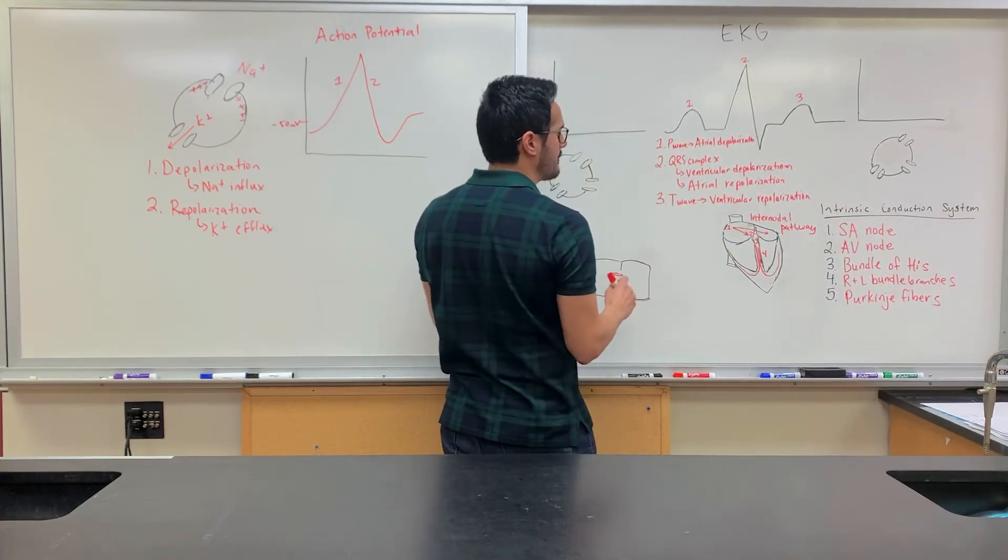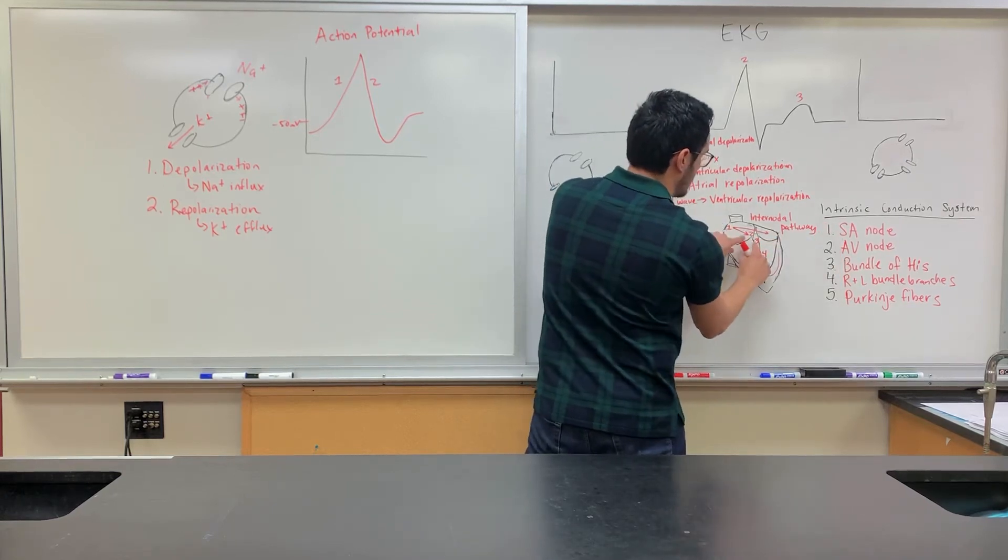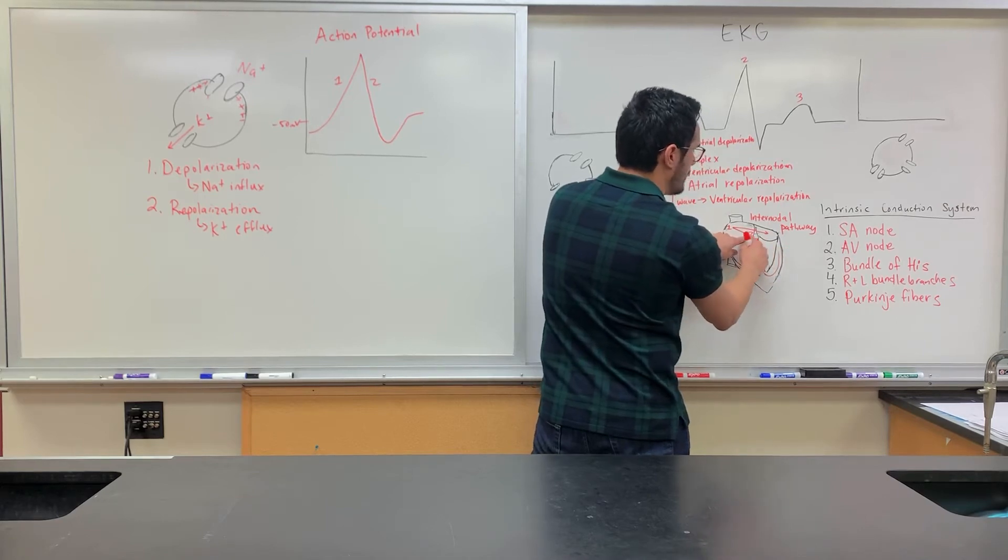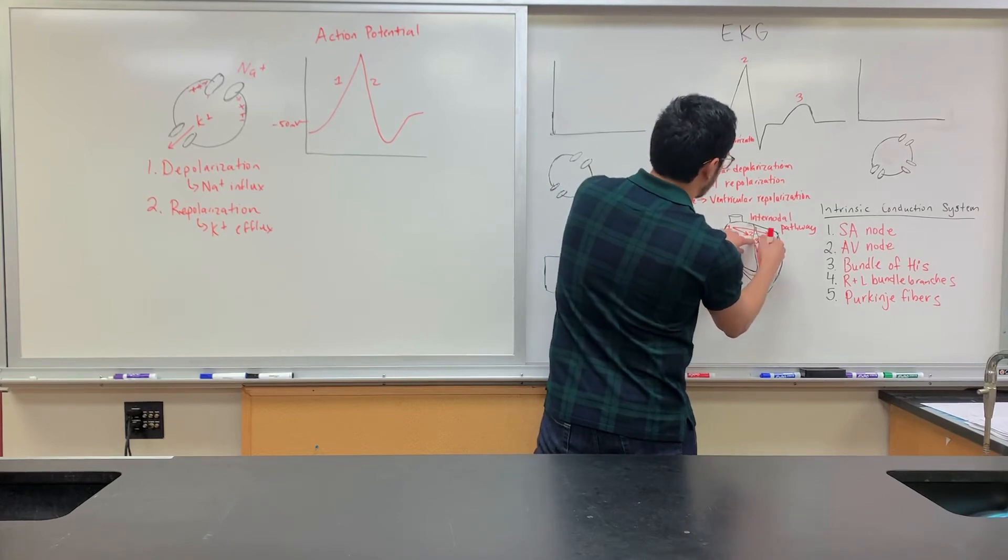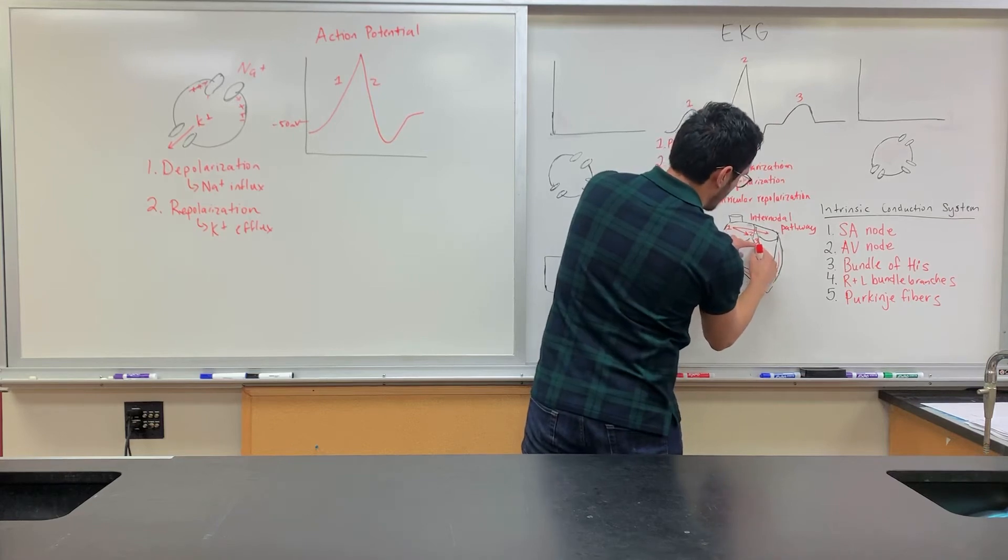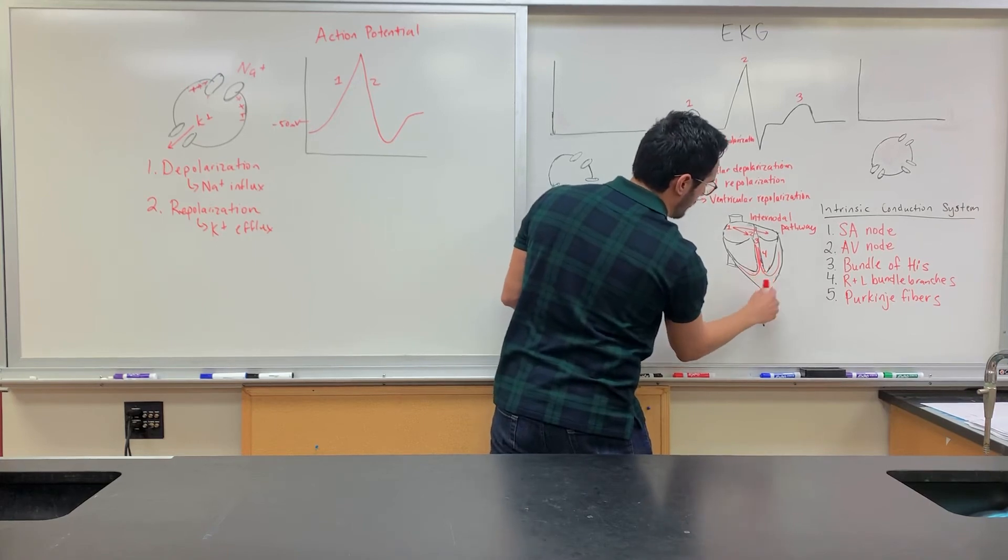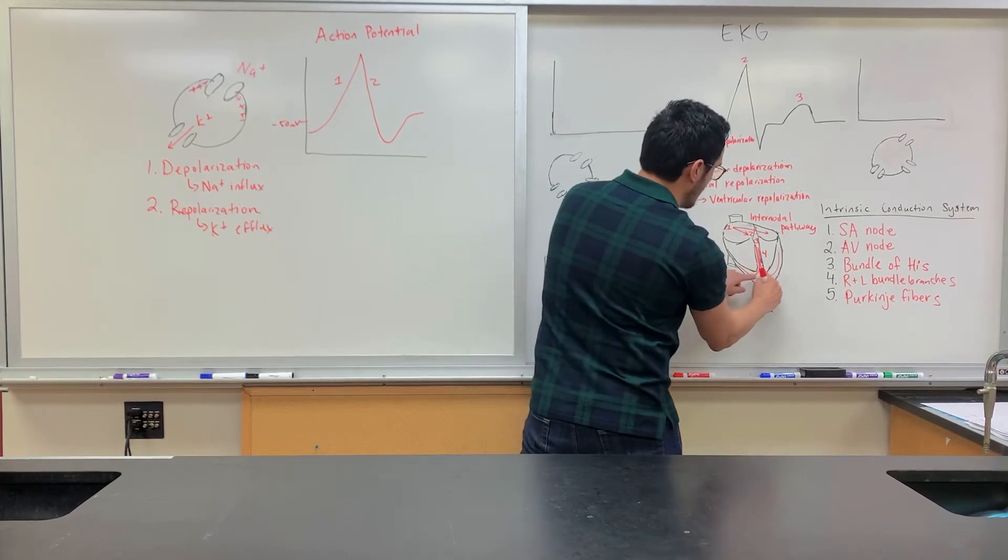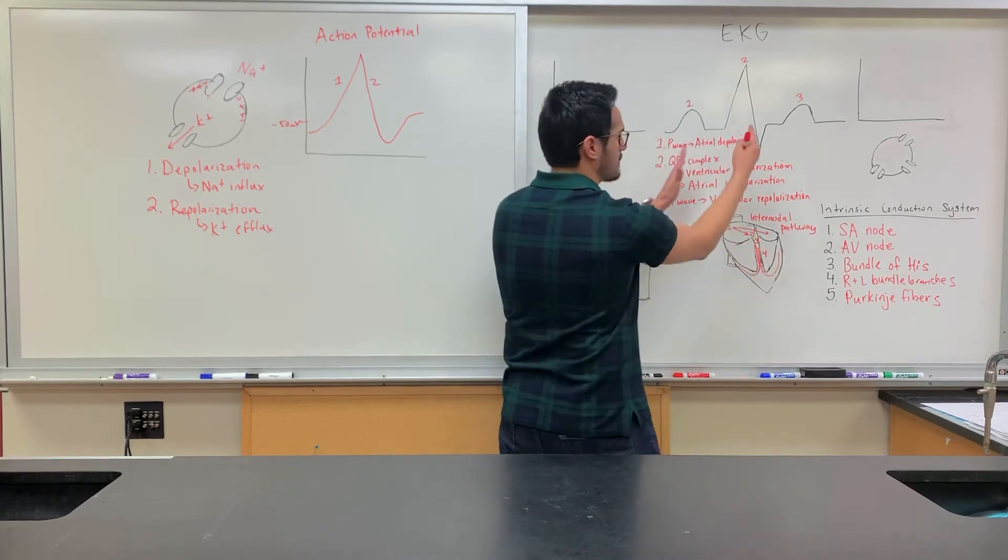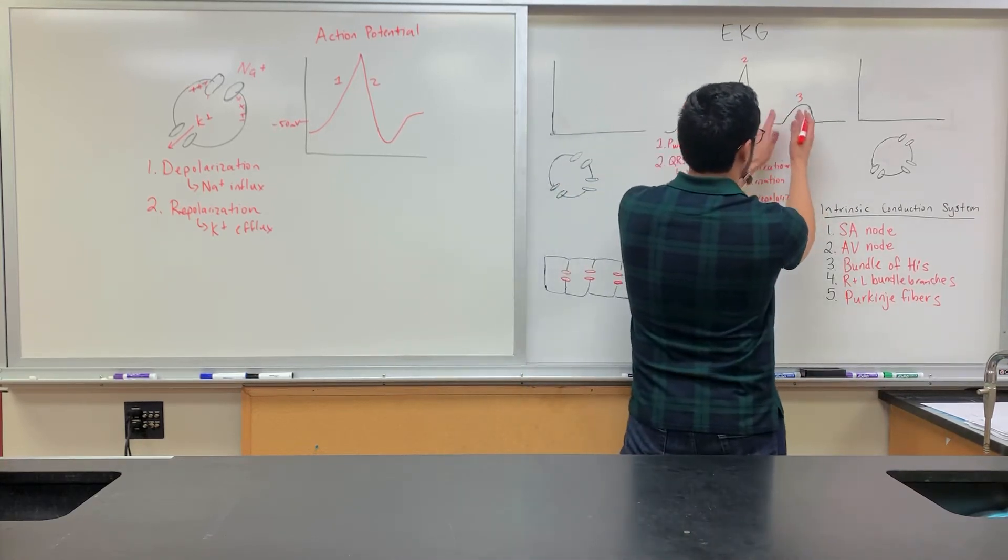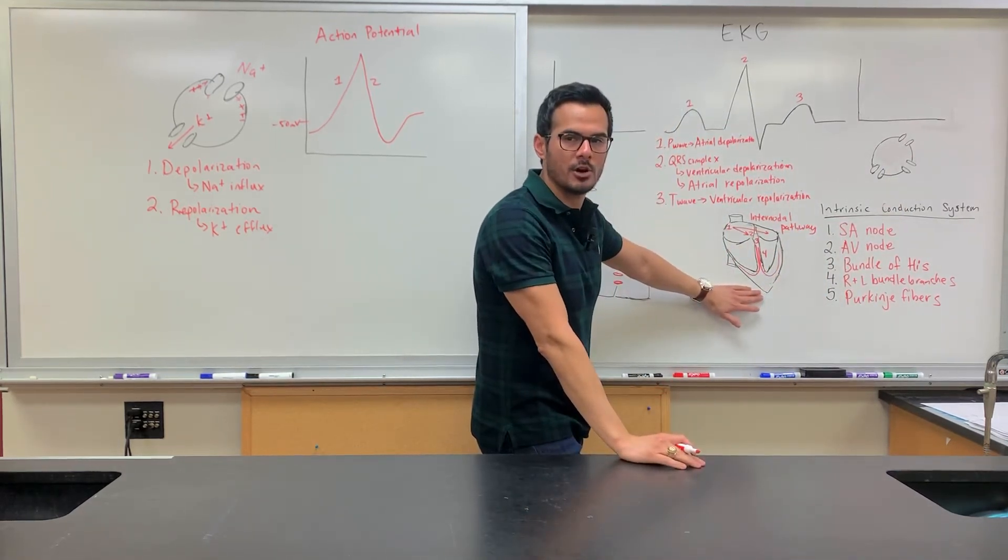We have atrial depolarization occurring here at the P wave, which is set off by the SA node. The signal reaches here to the AV node. There is a short delay that occurs here. Then from there, we get the formation of our QRS complex. That's what's coming down this way through the right and left bundle branches. So that's what's onset here at the, remember this is the apex of the heart. Then the ventricles will completely depolarize once it occurs all the way through the ventricles. Then after that occurs, we can get our full contraction of the myocytes or the cardiac muscle cells.